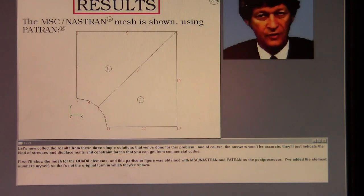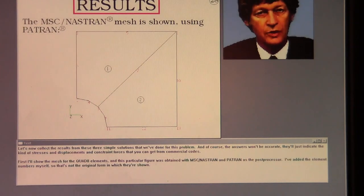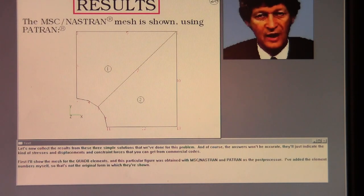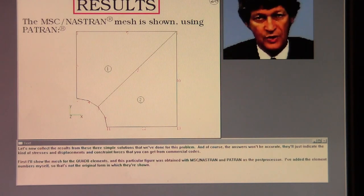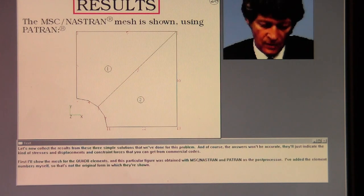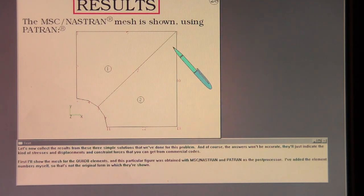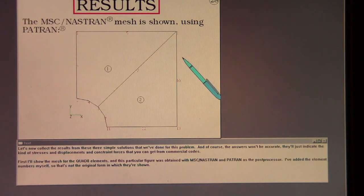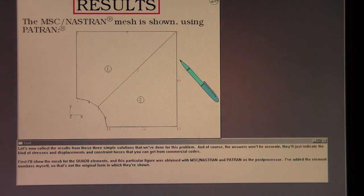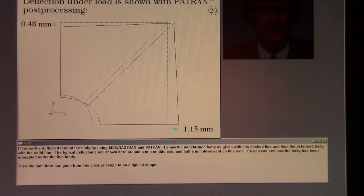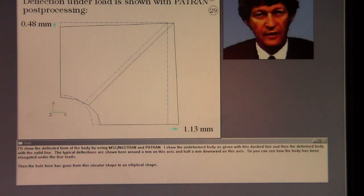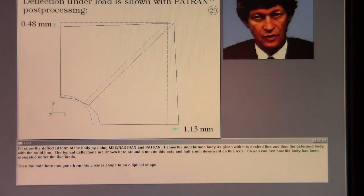Let's now collect the results from these three simple solutions that we've done for this problem. And of course the answers won't be accurate. But they'll just indicate the kind of stresses and displacements and constraint forces that you can get from commercial codes. First, I'll show the mesh for the Quad8 elements. And this particular figure was obtained with MSC Nastran and Patran as the post processor. I've added the element numbers myself, so that's not the original form in which they're shown.